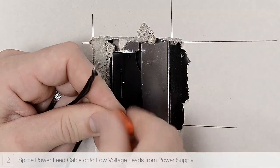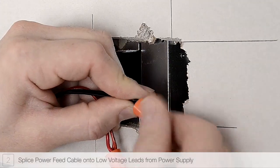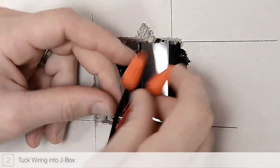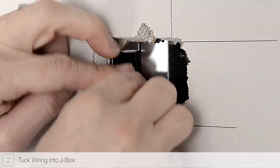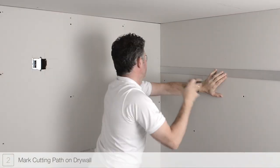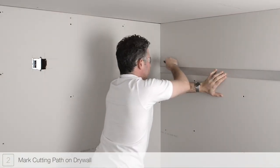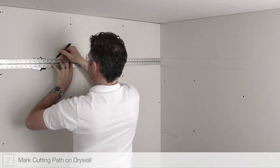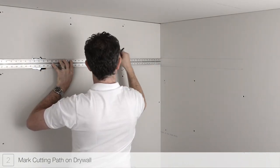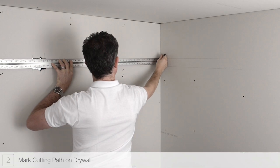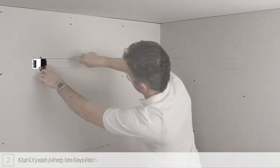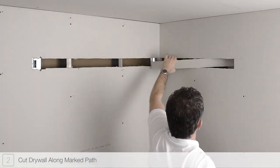Splice the included power feed cable to the low-voltage power wires. Place all electrical connections into the junction box. Using the drywall opening as reference, mark two and one-quarter inch wide lines the complete length of the channel along the drywall. Cut the drywall using a jab saw or other appropriate tool.